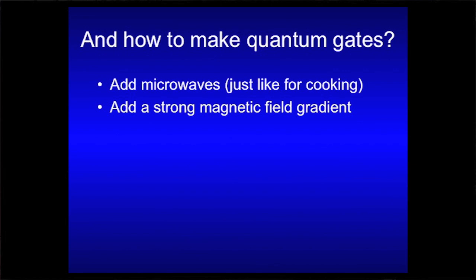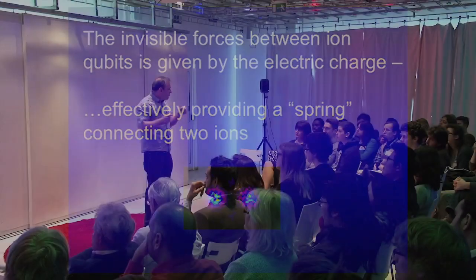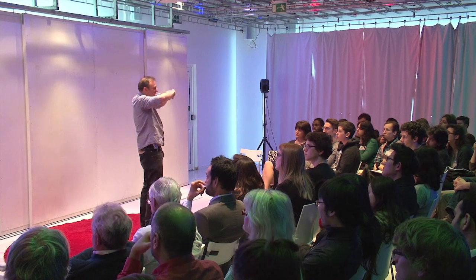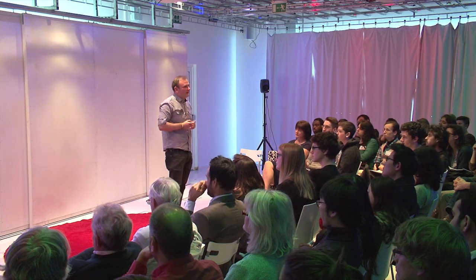Now, if you want a quantum gate, it's just like cooking. So, you add microwaves, you know, so it's perfect. And using microwaves, it turns out you can actually entangle. Then you use a very strong magnetic field gradient. So, it's a magnetic field with a very strong slope. And then you use the fact that two ions basically are repelled by the electric charge. And they basically move, basically. It's like a spring, basically. And all these ingredients together allows you to entangle ions and make these quantum gates.